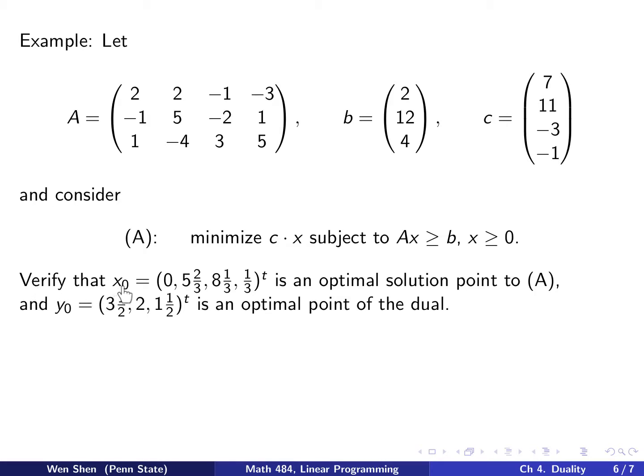The problem asks you to do the following: Verify that x₀, this vector given here with all the fractions, is an optimal solution to problem A, and y₀, which is given here, is an optimal point—an optimal solution of the dual—even though I have not even written out the dual. I want you to verify that. Let's see how we can handle this.